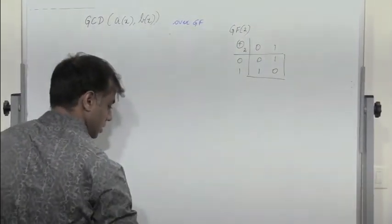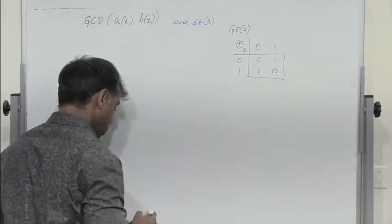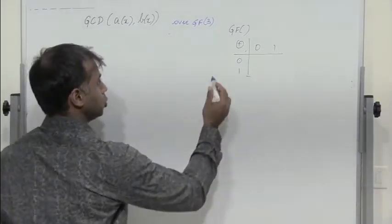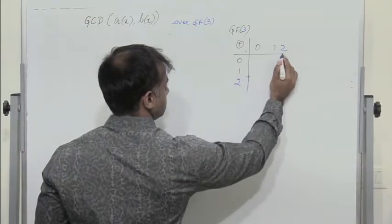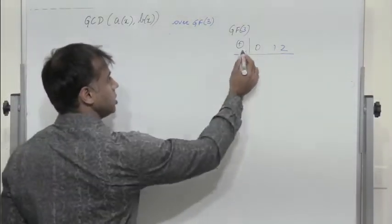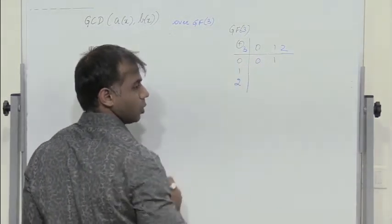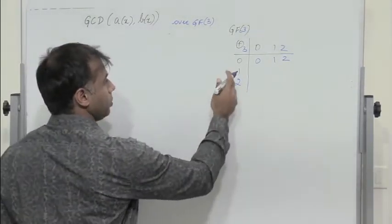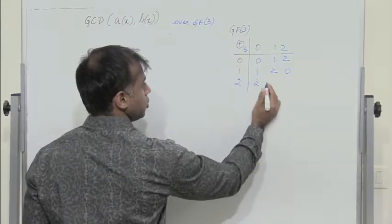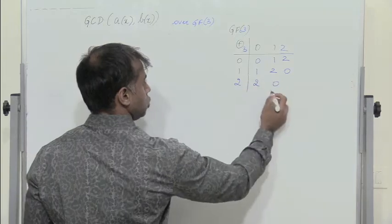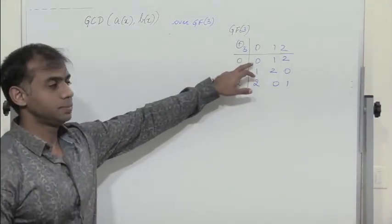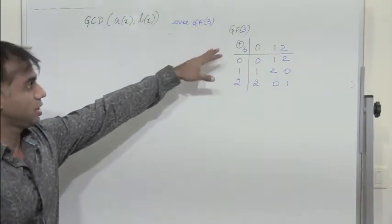We have seen how to find the GCD over GF(2). Now let us see how to perform GCD of two polynomials over GF(3). In GF(3), we have numbers 0, 1, and 2. This is the addition table over GF(3): 0+0=0, 0+1=1, 0+2=2, 1+0=1, 1+1=2, 1+2=3 which is 0 in mod 3, and 2+2=4 which is 1 in mod 3.